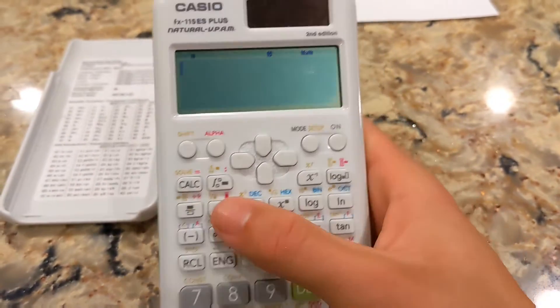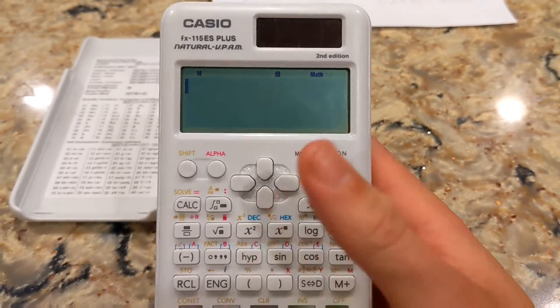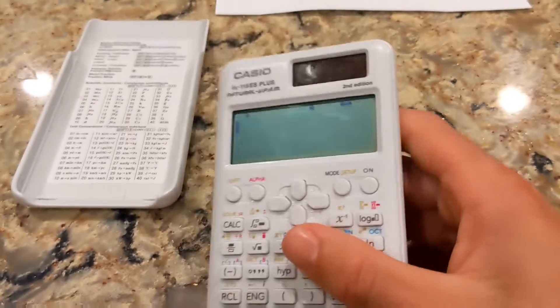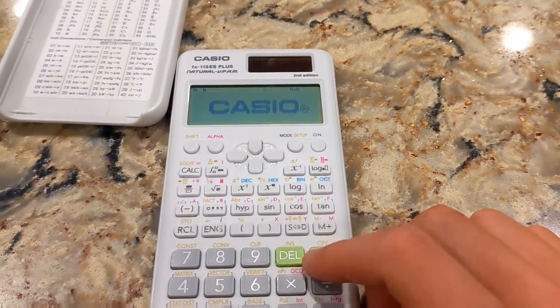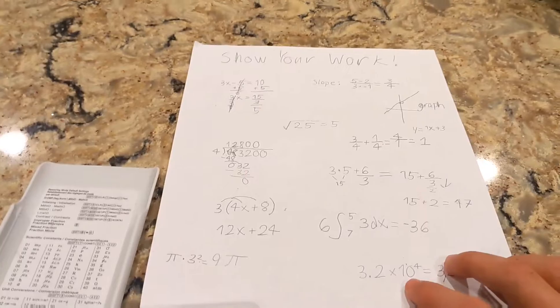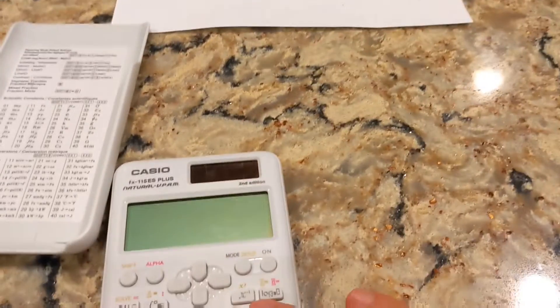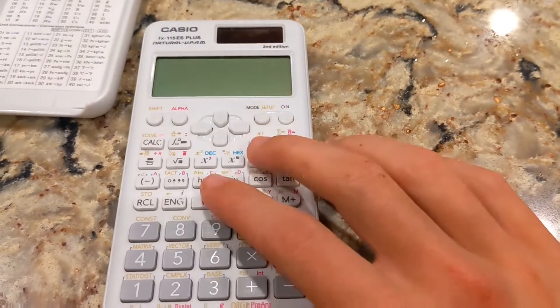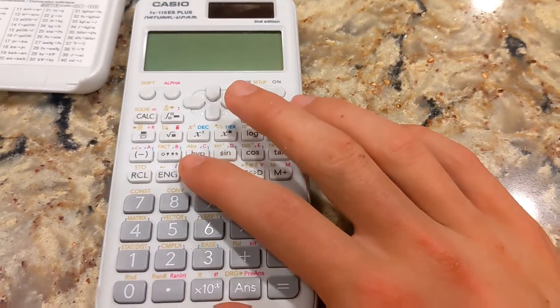And it is approved for the SAT and ACT for the calculator section. Of course, when you're doing the no calculator section, you're going to be given scrap paper where you need to do your work on. But for the calculator section, this thing does a great job. And it gets a lot done for you.